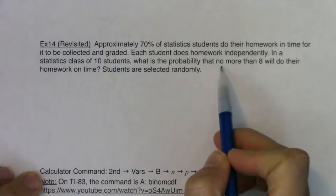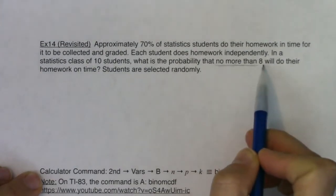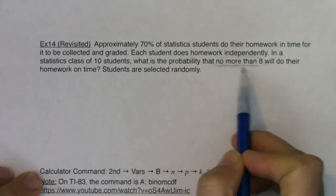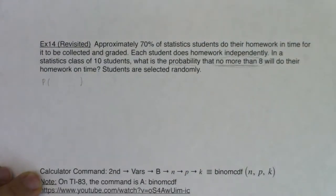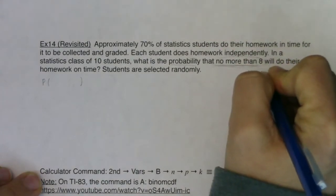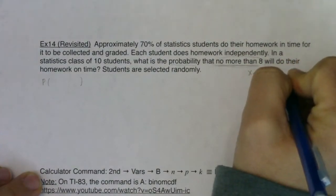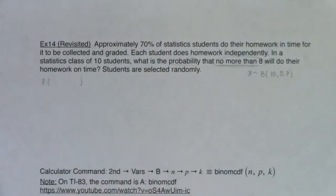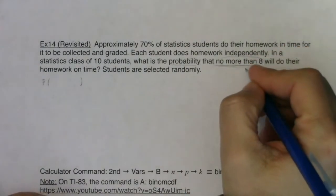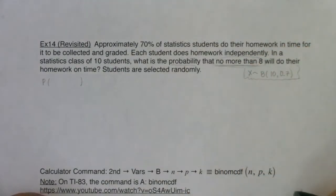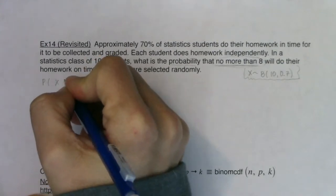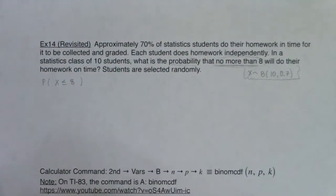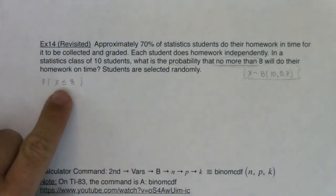This is changing because the original Example 14 used the phrase 'exactly eight.' When you see 'no more than eight,' that translates to a less than or equal to sign. We're on a binomial distribution with 10 students and a 70% chance of success for any one individual student, counting how many of the 10 do their homework on time. So instead of an equal sign in the parentheses, we have a less than or equal to sign.